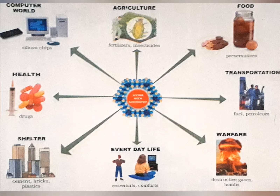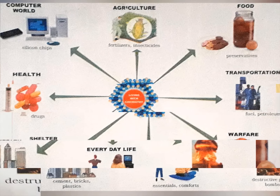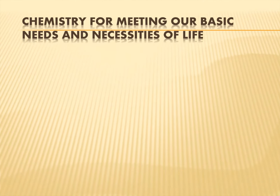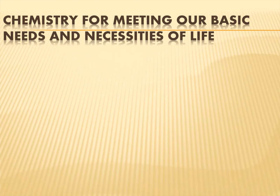There are eight main importances of chemistry, which are: computer world, agriculture, food, transportation, warfare, everyday life, shelter, and health. In agriculture, fertilizers and insecticides are used. Destructive gases and bombs are included in warfare. Preservatives belong to food. Chemistry meets our basic needs and necessities of life.